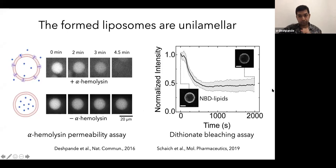You can do this in another way using dithionite bleaching assay. So if you make your liposome using NBD lipids, which are fluorescent and add dithionite outside, this dithionite cannot pass across the membrane and only bleaches the outer leaflet. So if it's a unilamellar liposome, the fluorescence should basically reduce by a factor of two. And this is exactly what you see here. Over time, once the dithionite is added, the fluorescence is reduced to half of the original value, which shows that indeed these liposomes are unilamellar.